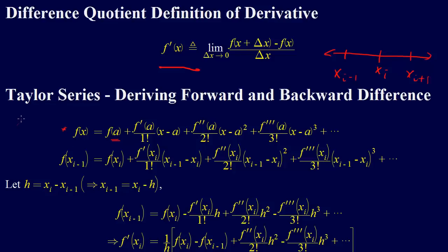We can write this by letting the x that we want to know, x equal x i minus 1, and then a equal x i. We just plug that in, and that's where we get this formula. f of x i minus 1 is equal to f of x i plus f prime at x i over 1 factorial, x i minus 1 minus x i, plus f double prime x i over 2 factorial, and so forth.